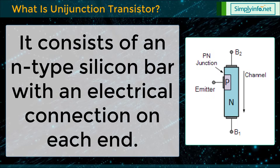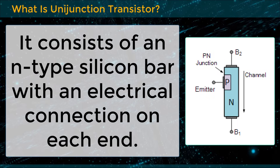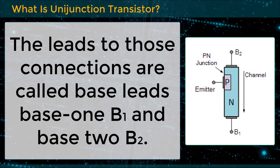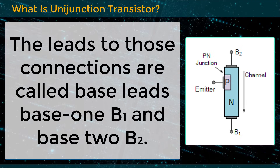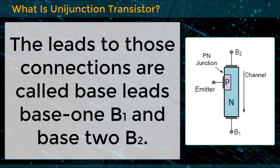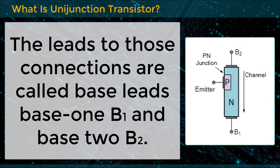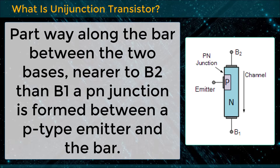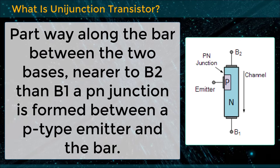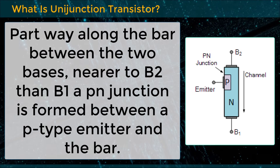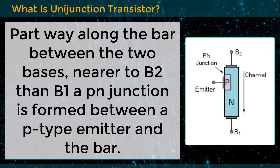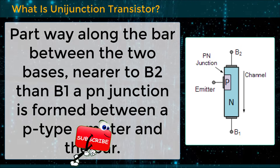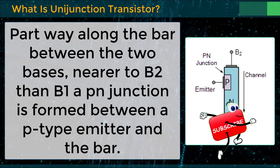It consists of an n-type silicon bar with an electrical connection on each end. The leads to those connections are called base leads: base 1, i.e. B1, and base 2, i.e. B2. Partway along the bar between the two bases, nearer to B2 than B1, a PN junction is formed between a P-type emitter and the bar. The lead to this junction is called the emitter lead E.